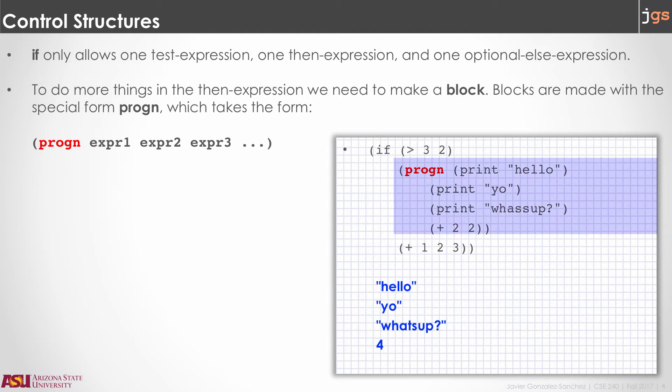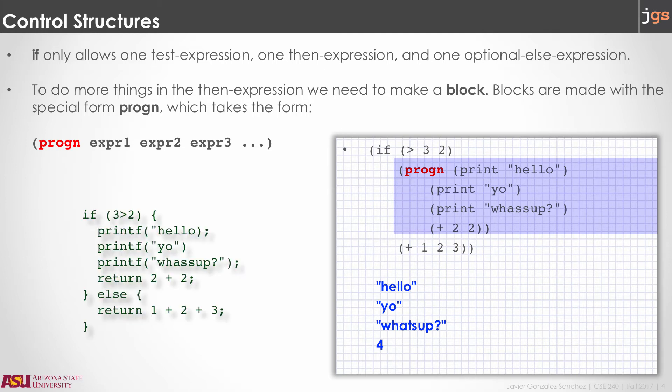For instance, here we have this if condition. The first parameter is the condition itself: 3 greater than 2. The next parameter is a PROGN block that has four instructions inside. And then the addition of 1, 2, and 3 is the third parameter inside the list that begins with the if keyword. So that condition is equivalent to a corresponding block in C or C++.